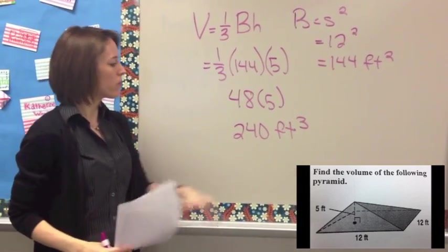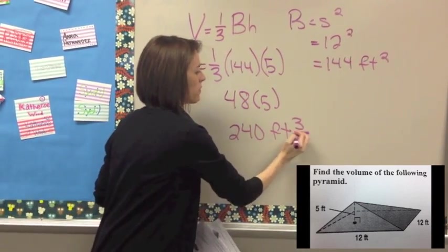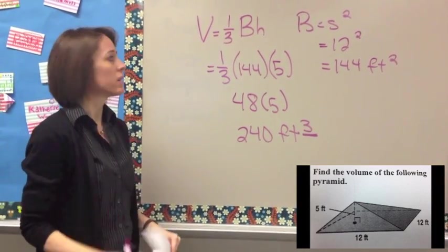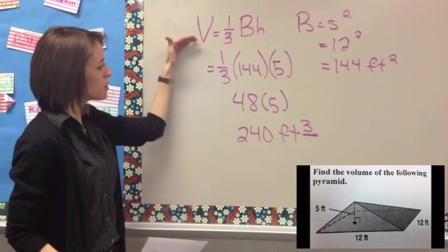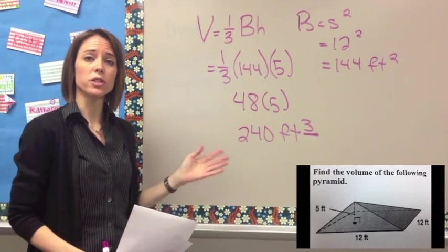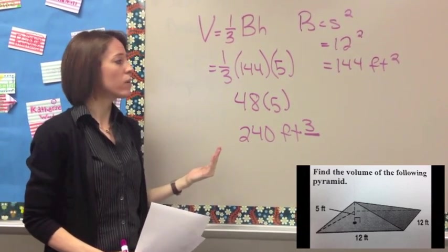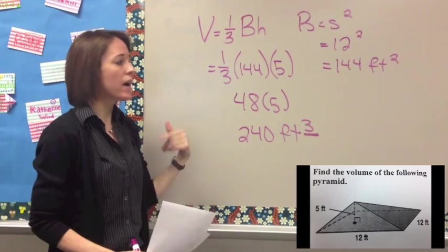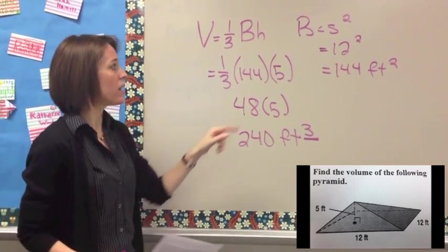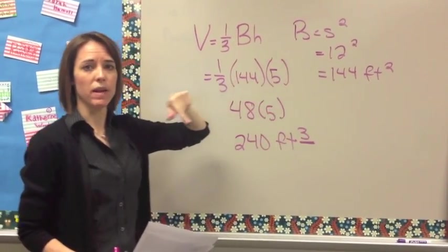Don't forget — whenever we're doing volume, we always use cubic units, because there are three dimensions: length, width, and height. Go back and check if you can follow those steps. If you have questions, jot them down, rewind and double-check. Go ahead and try example 2 on your own — don't forget to identify what your base shape is in order to solve it.